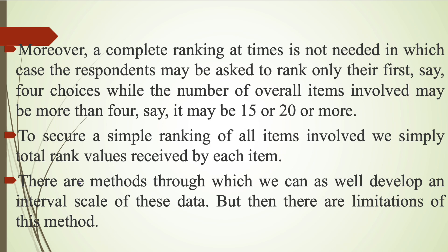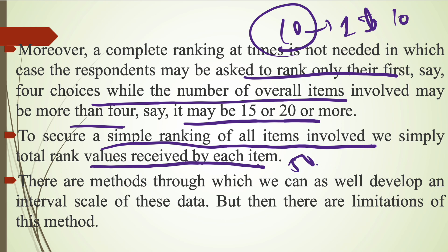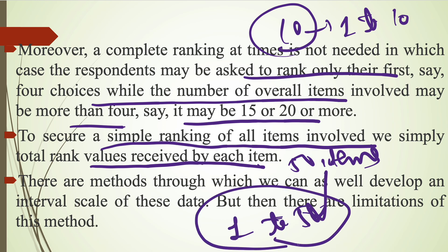Moreover, a complete ranking is not needed in which case the respondents may be asked to rank only the first, say 4 choices while the number of overall items involved may be more than 4, say it may be 15 or 20 or more. To secure a simple ranking of all items involved, we simply total rank values received by each item. If there are 10 items, we assign rank from 1 to 10. If we have 50 items, then we assign rank from 1 to 50. So according to number of items, we have to assign the rank to the items.